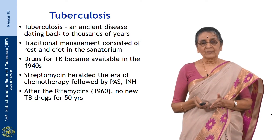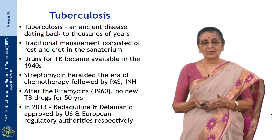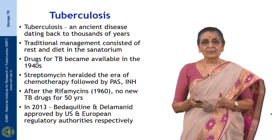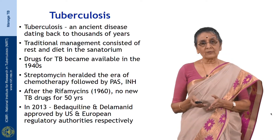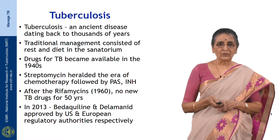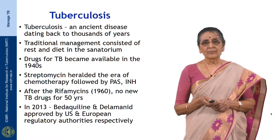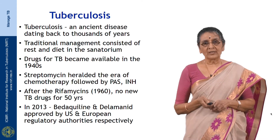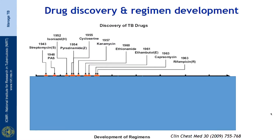Let us look at the number of drugs that came after the 1960s. For 50 years there were not many new drugs, but in the last decade a number of drugs are being tried in phase 2 and phase 3 trials, especially bedaquiline and delamanid, approved by US and European regulatory authorities. This diagram clearly shows the drugs and their availability in various periods, starting with streptomycin, PAS, INH, then pyrazinamide, then rifampicin, after which management changed completely.